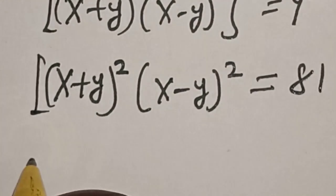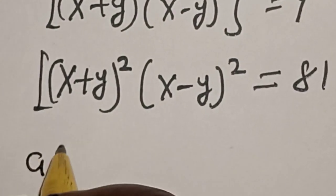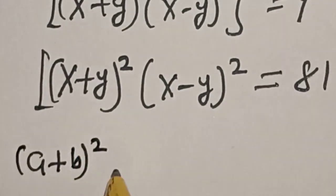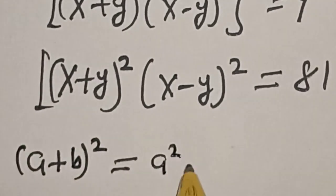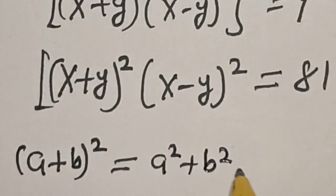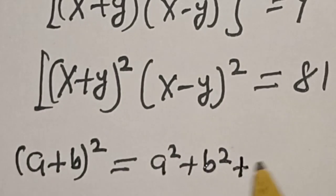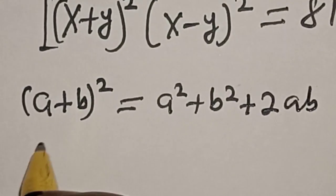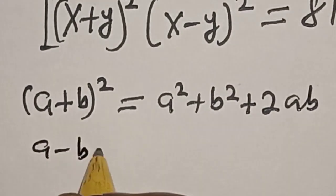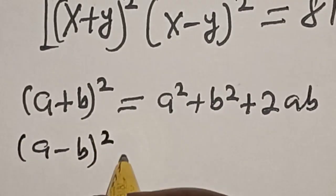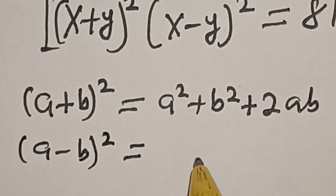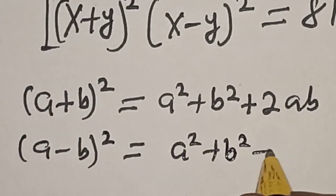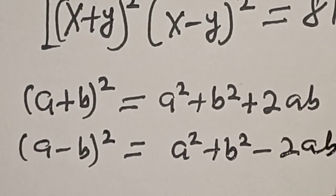Now remember this rule: if you have (a plus b) squared, this is equal to a squared plus b squared plus 2ab. Then also, if you have (a minus b) squared, this is equal to a squared plus b squared minus 2ab.